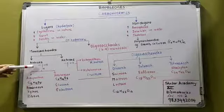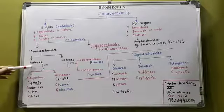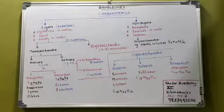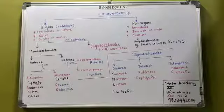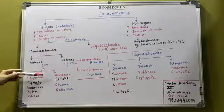Monosaccharides are classified on the basis of the functional group as aldoses and ketoses. Aldoses have aldehyde as a functional group, and ketoses have a ketone as the functional group.